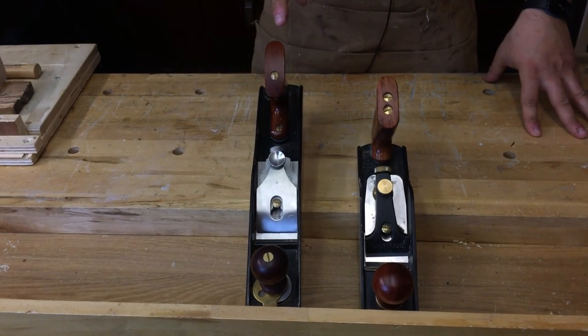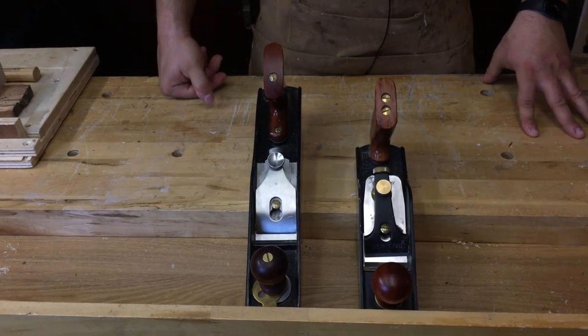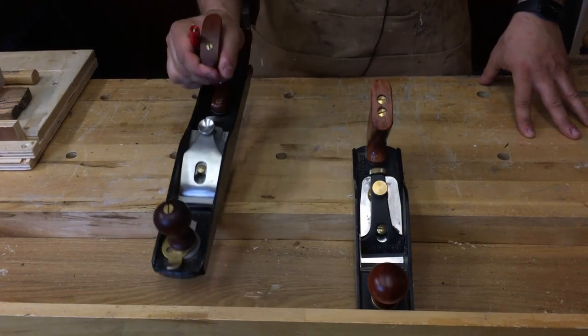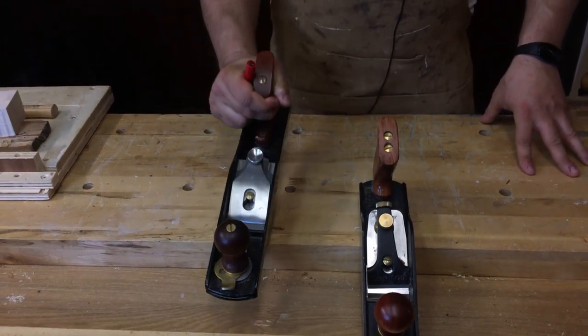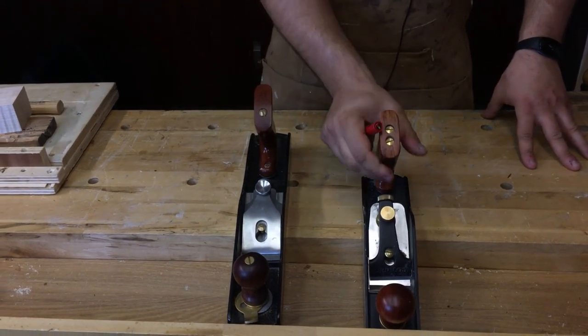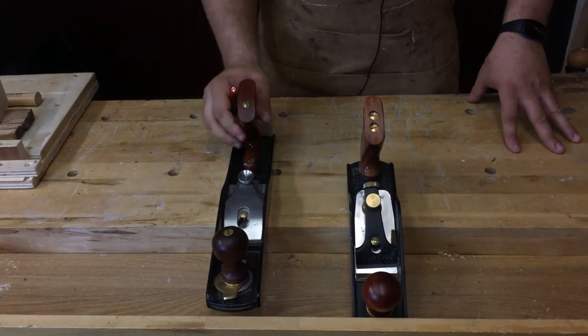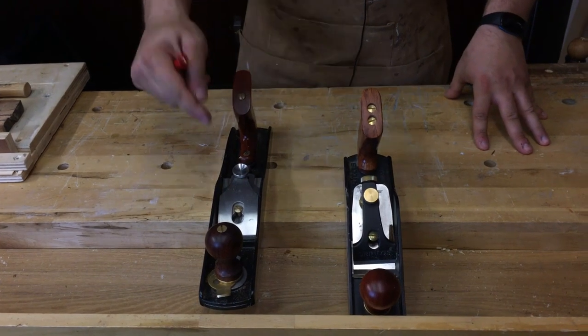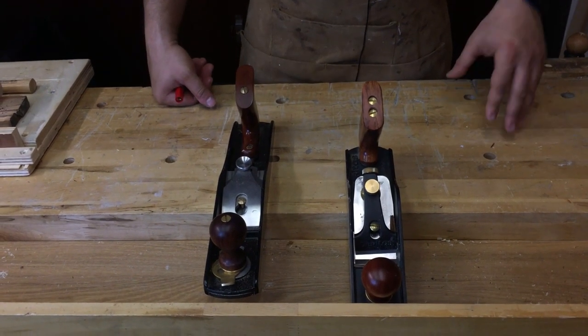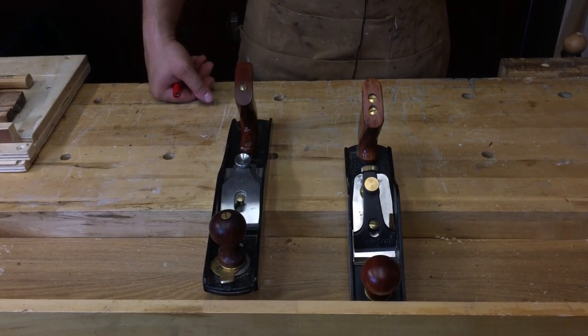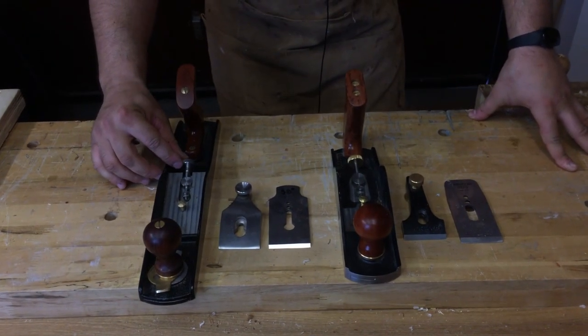In my collection there are two types of low angle planes. One is an Alex jack plane and the other one is a Veritas finishing plane. The Veritas one is very similar to a number 3 and the Alex one is very similar to a traditional number 5.